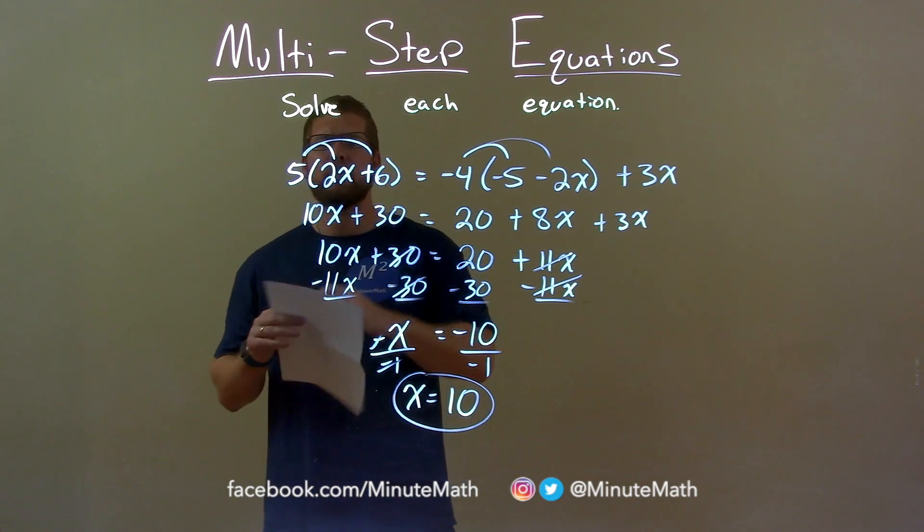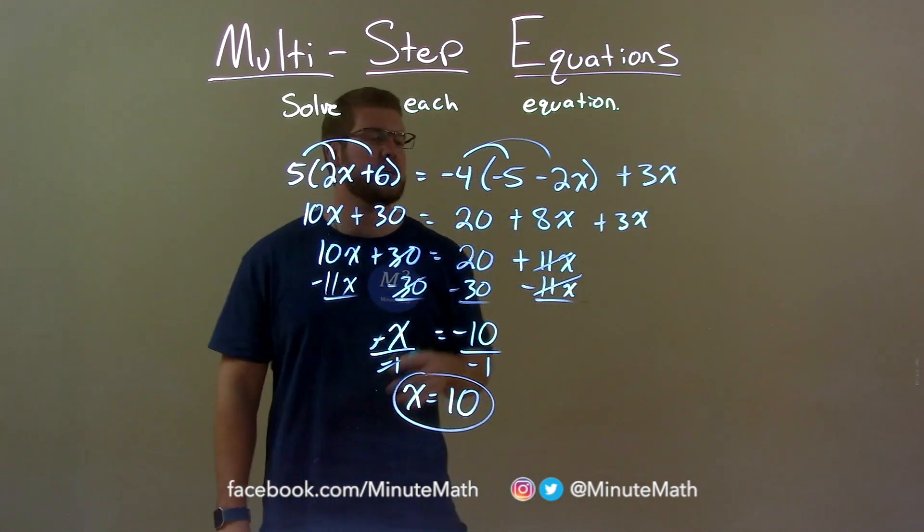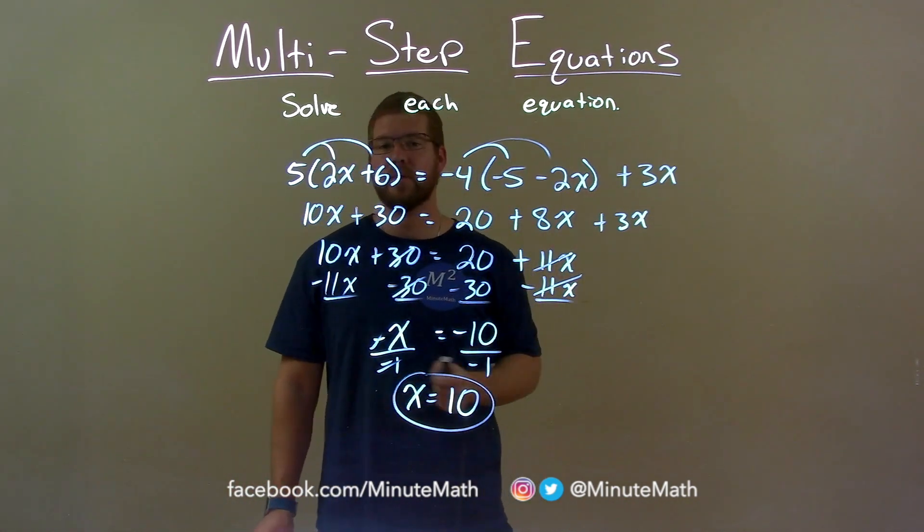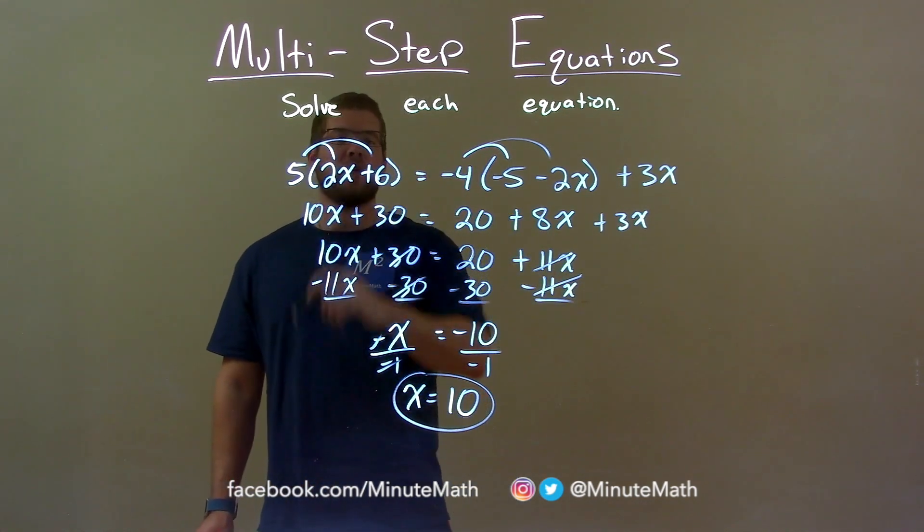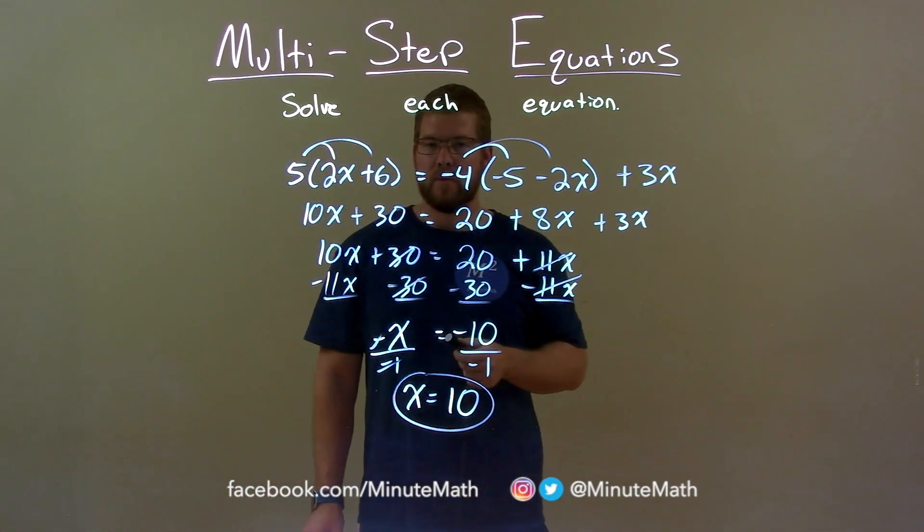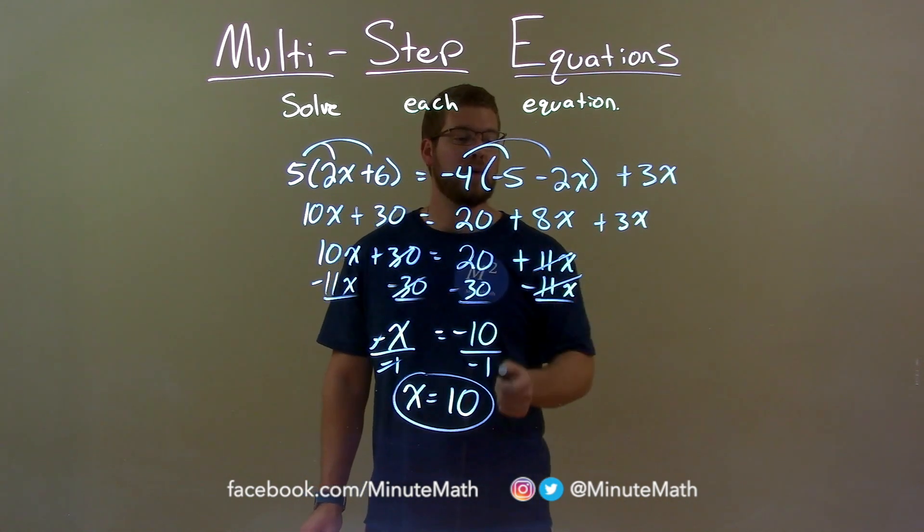Quick recap. We're given 5 times 2x plus 6 equals negative 4 times negative 5 minus 2x and then plus 3x. And we have to solve for x. First step, I distribute the 5 into my parentheses and then negative 4 into my parentheses. I then combine 8x and 3x to be 11x.